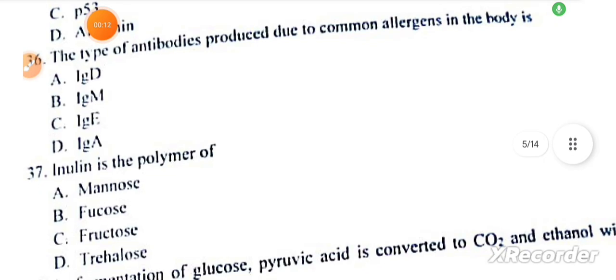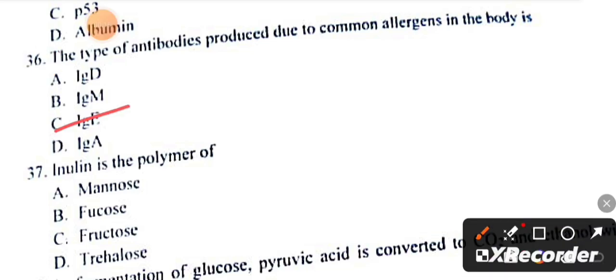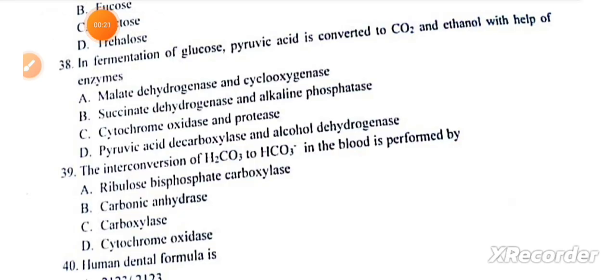Question number 36: The type of antibodies produced due to common allergies in the body is IgE. Inulin is a polymer of fructose. Question number 38: In fermentation of glucose, pyruvic acid is converted to CO2 and ethanol.